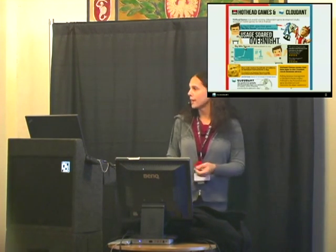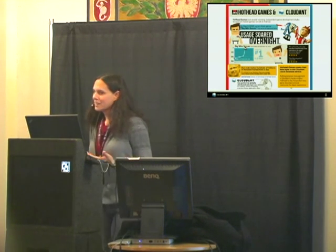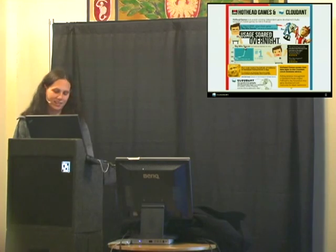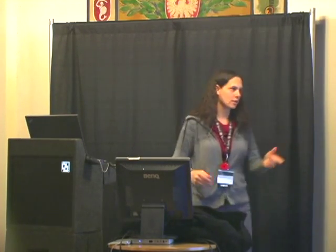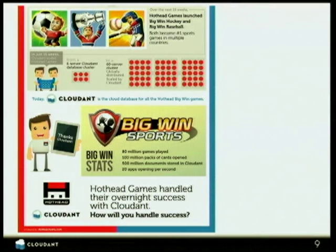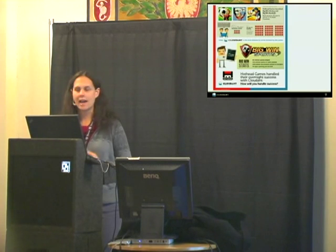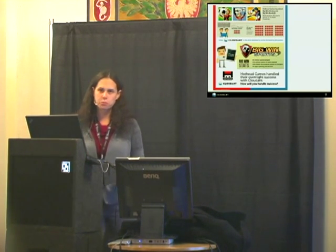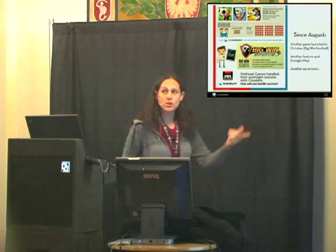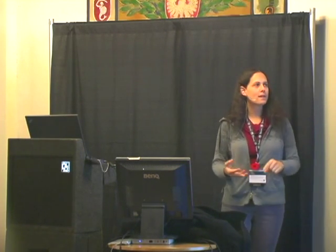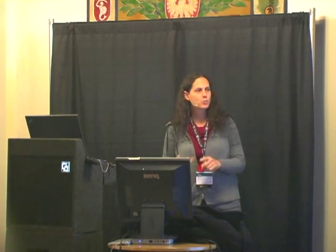Within two days it became the number one app on the store. So you can imagine a little bit of a challenge in terms of scaling the back end. We're their back end for data, and we took them from a six-server to about a 60-server cluster in about 16 weeks of work. The types of data driving through this: 80 million games played, 100 million packs of cards, 500 million documents in the database, and about 20 apps opening every second. They've since added Big Wind Soccer, hockey, baseball, and football.